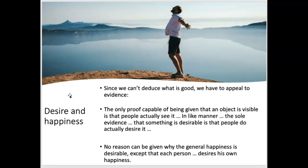Moving on to desire and happiness: since we can't deduce what is good, we have to appeal to evidence, as is common with all first principle claims. The only proof capable of being given that an object is visible — this is what Mill argues — is that people can actually see it. So this is an argument by analogy. The sole evidence that something is desirable is that people desire it. Mill feels the evidence that happiness is desirable is simply the fact that people desire happiness. Therefore, no reason can be given why the general happiness is desirable, except that each person desires his or her own happiness.